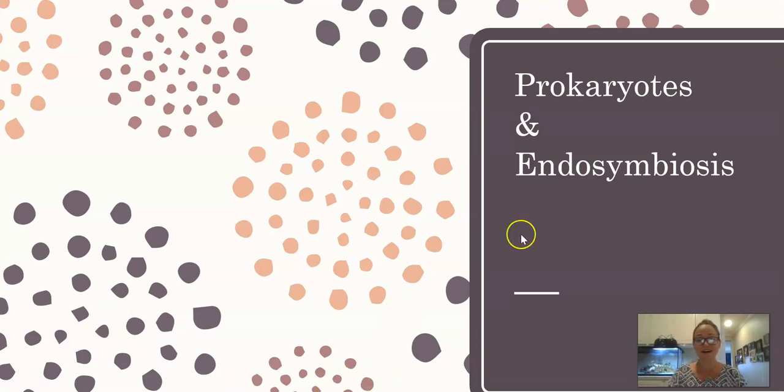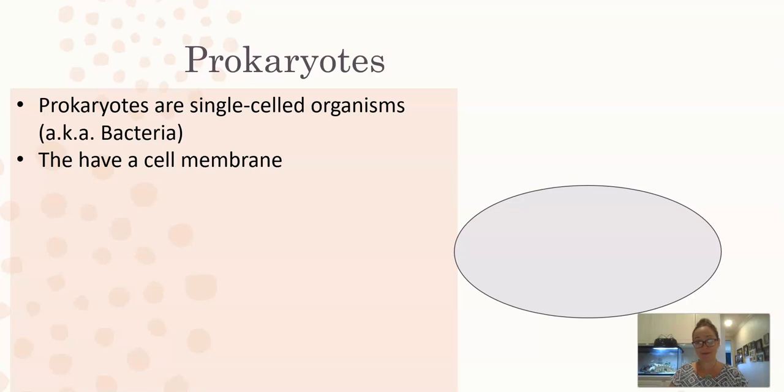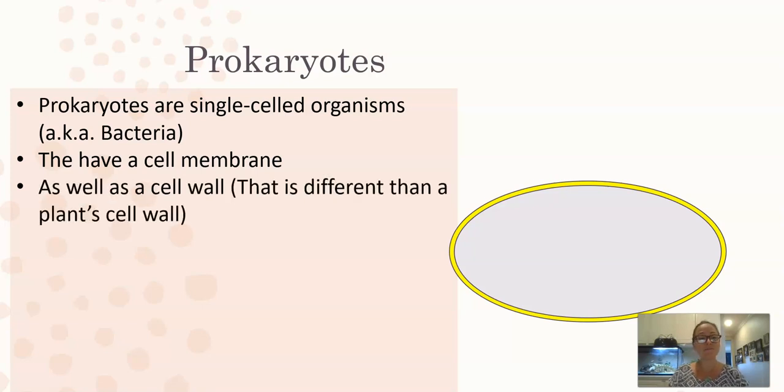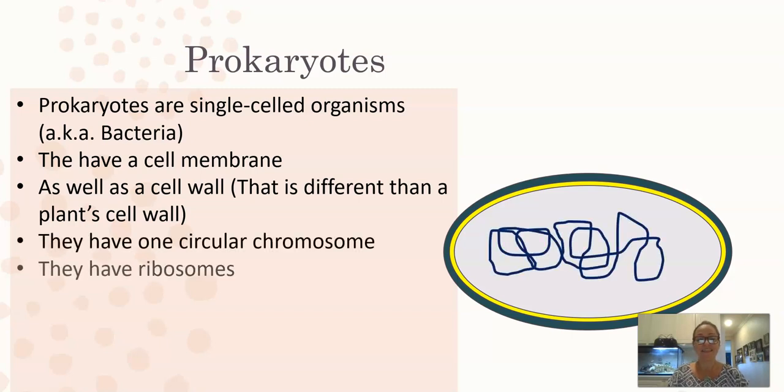So when we look at prokaryotic cells, they are single-celled organisms that have a cell membrane. Our prokaryotes are bacteria and archaeans, and that cell membrane is surrounded by a cell wall. They have one circular chromosome and they have ribosomes. Their ribosomes are a different size than eukaryotic ribosomes, however they function the same way.